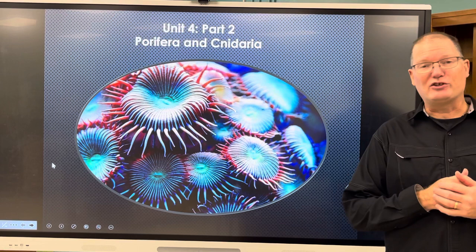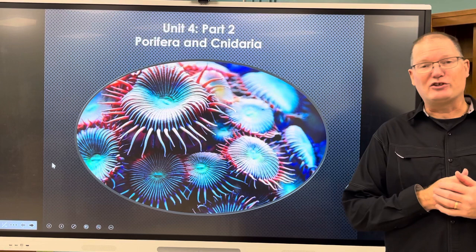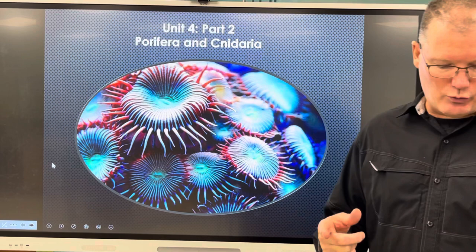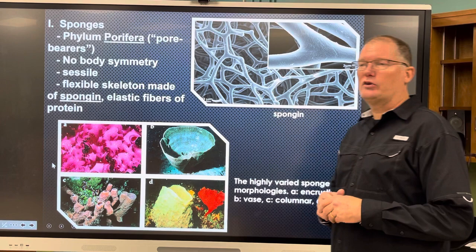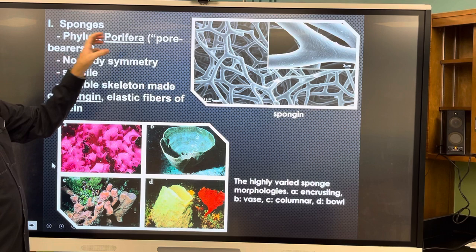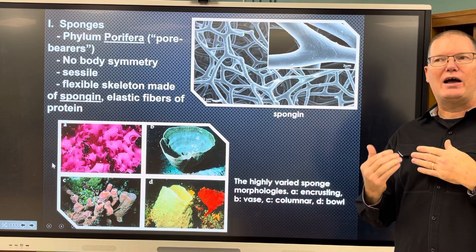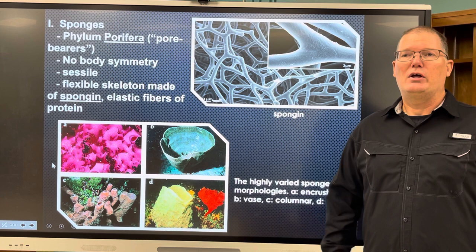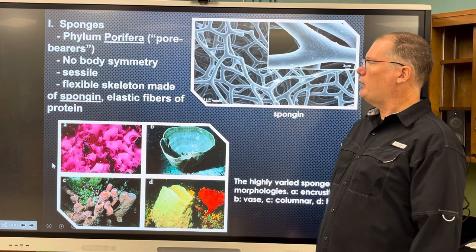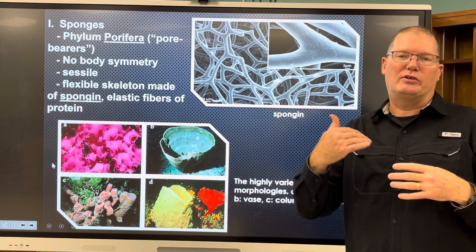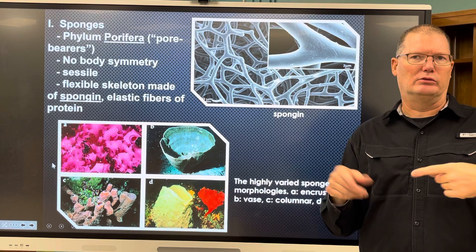We're talking about Porifera, which are sponges, and Cnidarians. Sponges are phylum Porifera — that means they are pore bearers. They have pores, and the pores are important because they allow flow of water, which is how these animals — very ancient, very primitive animals — feed. They don't have any body symmetry, which means no matter how you cut them it's going to be different.